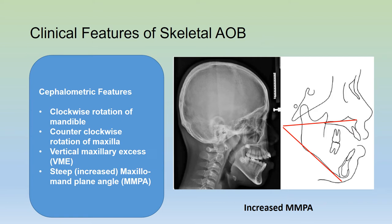The cephalometric features of a skeletal anterior open bite include clockwise rotation of the mandible or counter-clockwise rotation of the maxilla. There is vertical maxillary excess and a steep or increased maxillomandibular plane angle.